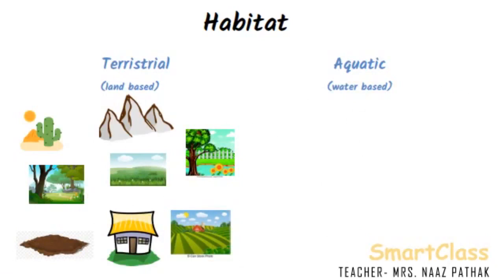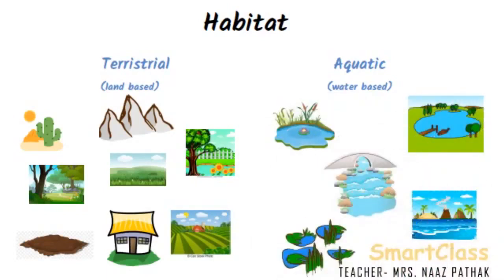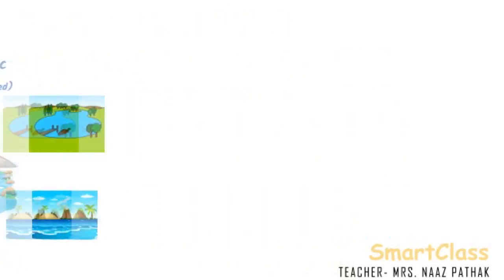A water-based habitat is called an aquatic habitat. The plants and animals which live in water are said to live in aquatic habitat. Some of the examples of aquatic habitat are ponds, lakes, rivers, oceans, etc. The types of habitat varies from organism to organism.